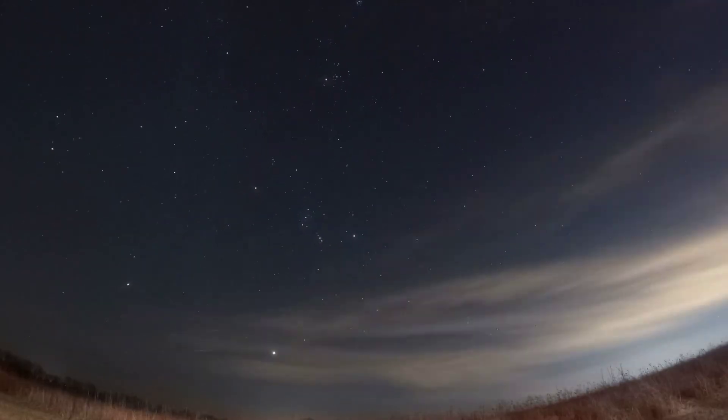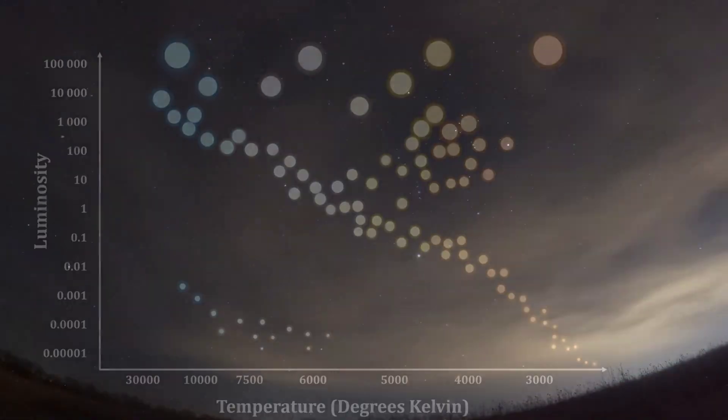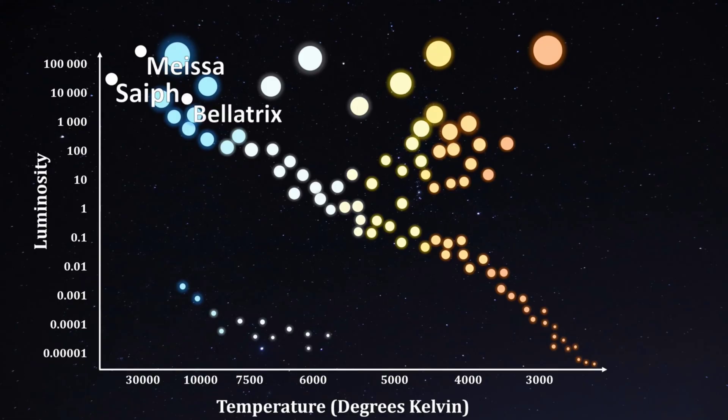All of the stars we saw in the constellation Orion earlier can be located in this graph. Bellatrix, Misa, Saif, and Rigel are all blue giant stars in the main sequence, although they range somewhat in luminosity and temperature. Betelgeuse, the only reddish star we saw, is over here. It's a red supergiant.